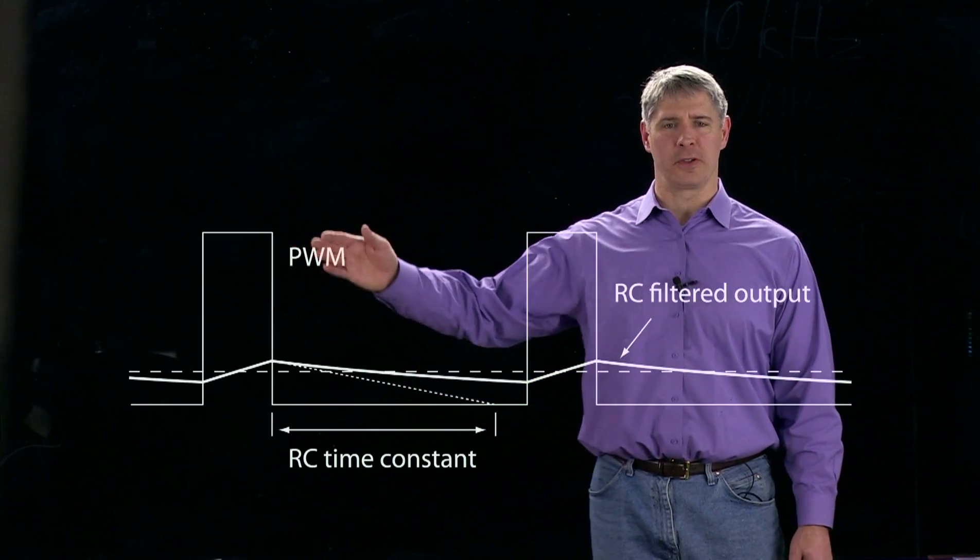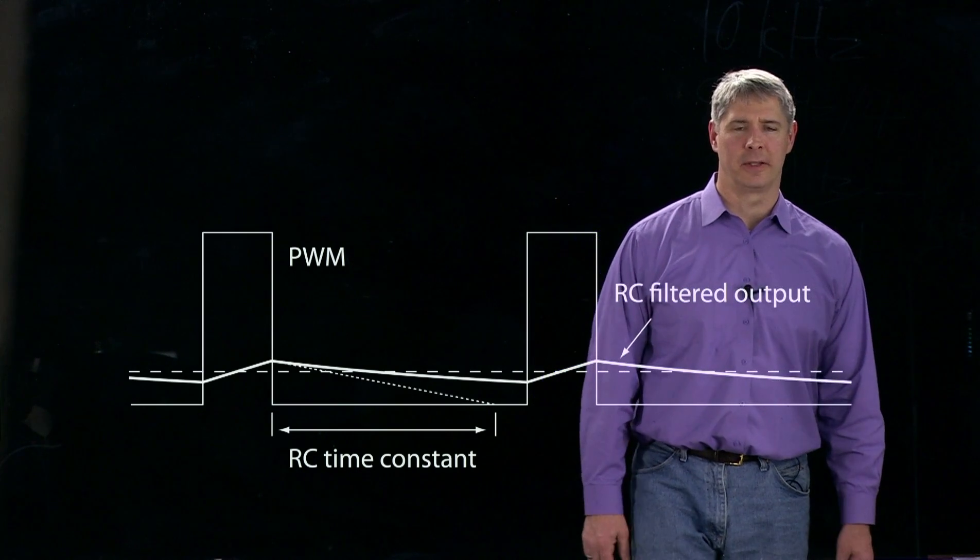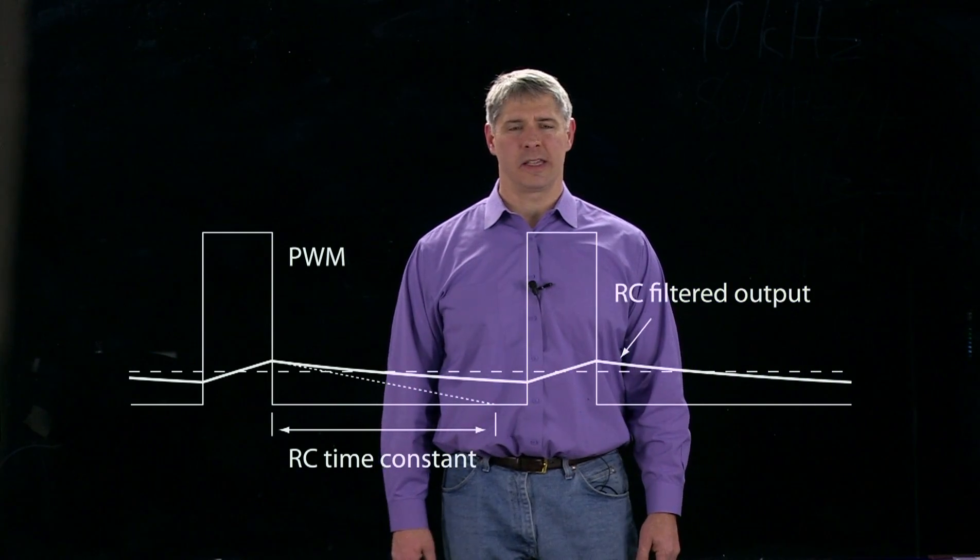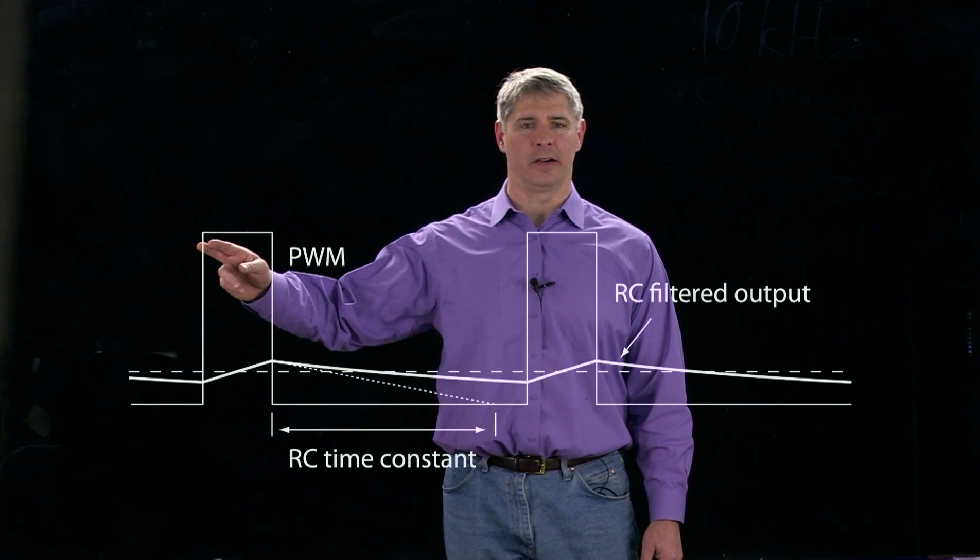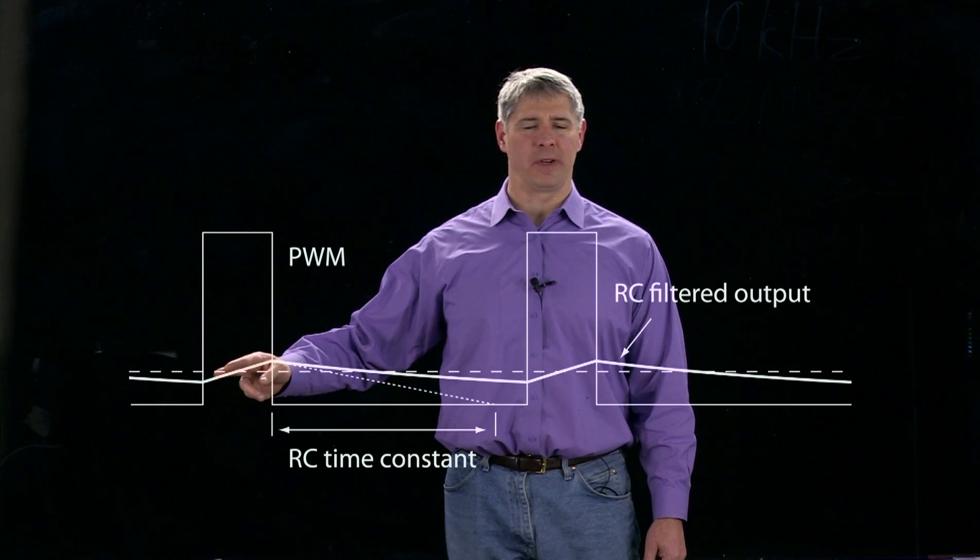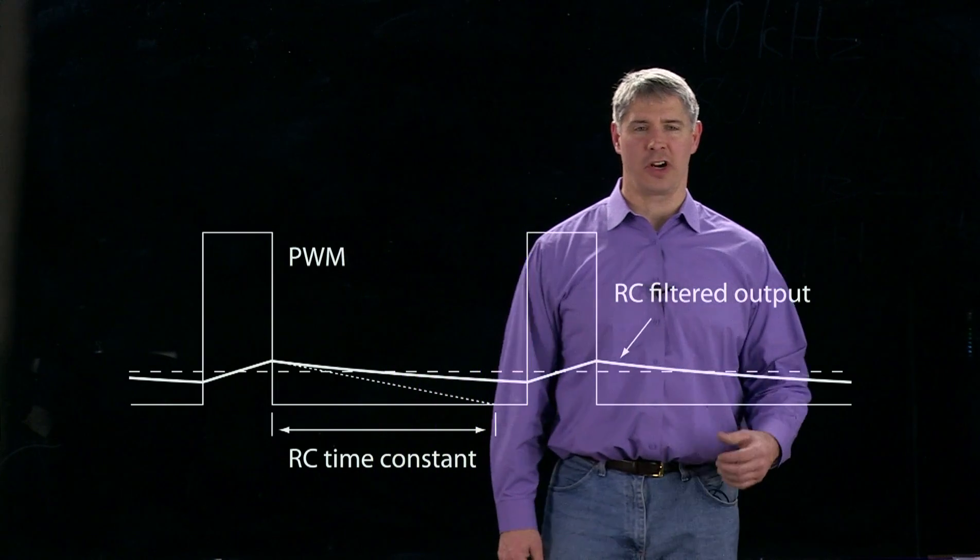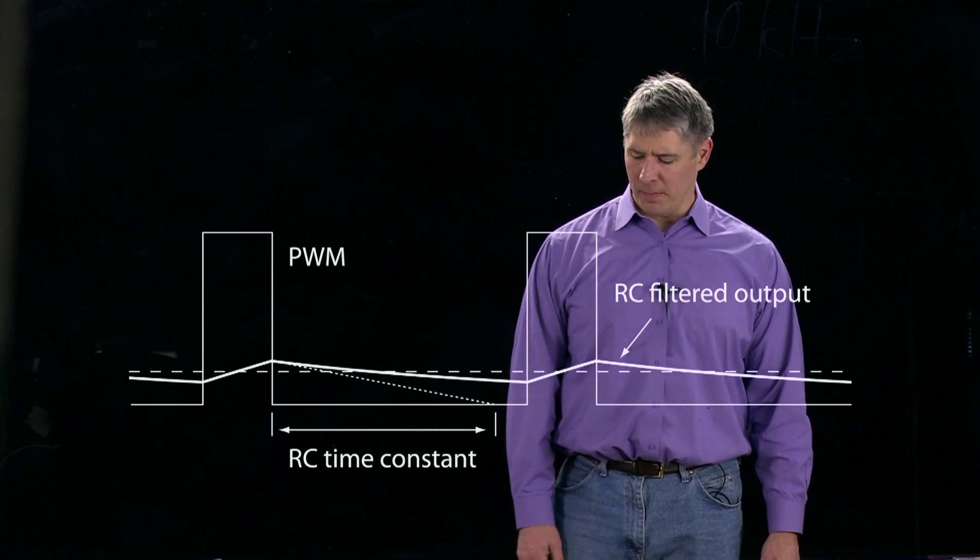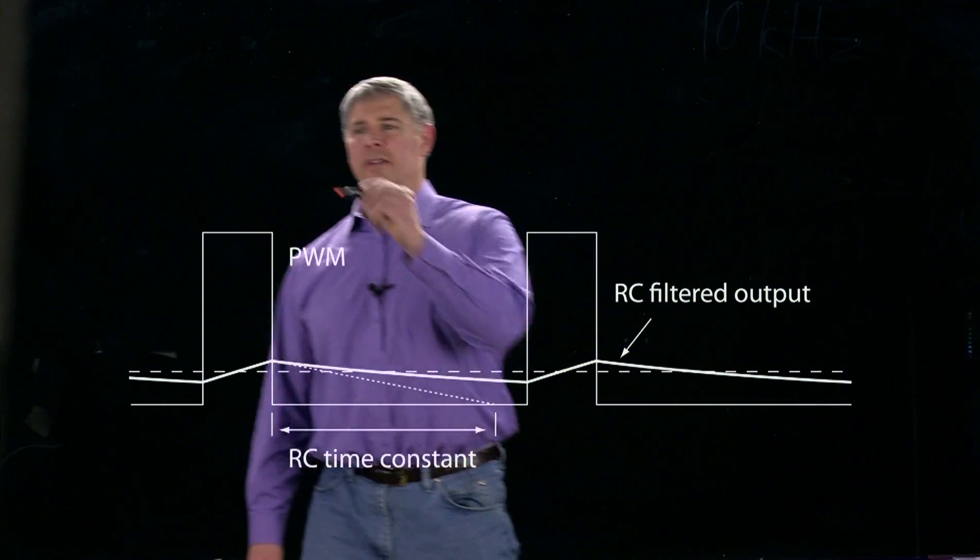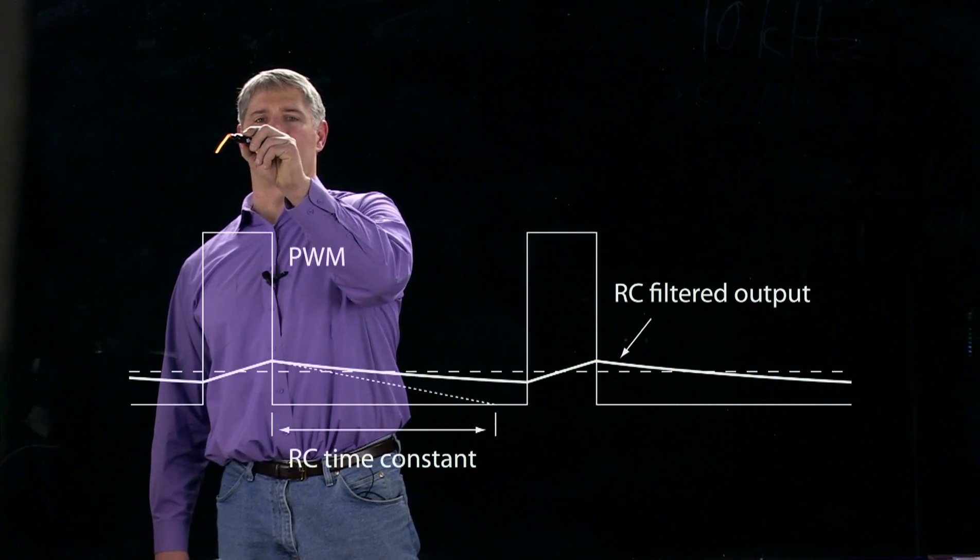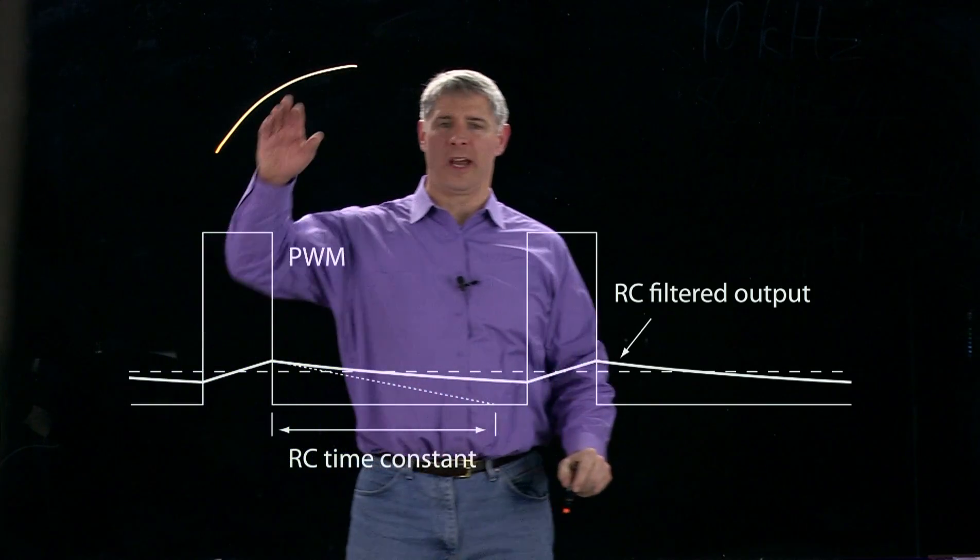So here we zoom in on the pulse width modulation output. And what we see is that when the output goes from low to high right here, then what's actually happening on the capacitor is it's charging up. And it's charging up by a first order time constant. So this is something that you've seen before. So the charging cycle looks something like this. It's growing towards an asymptote.